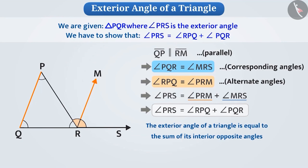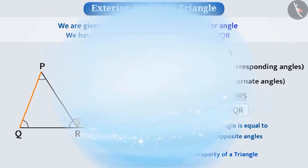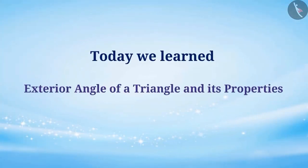The above relation between an exterior angle of a triangle and its two interior opposite angles is referred to as the exterior angle property of a triangle. Today we learned about the exterior angle of the triangle and its properties. In the next video, we will see some examples related to this concept.